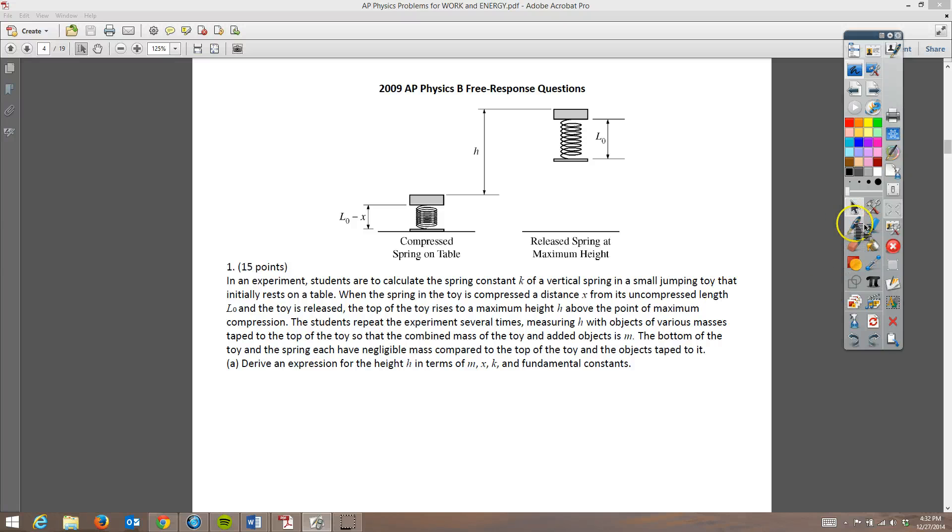Hey, this is Horner, and this is 2009 AP Physics B Free Response Question Number 1, worth 15 points. We've got a spring that's attached to a mass, and then just to a little block on the bottom that doesn't have any mass, neither does the spring. We compress it, and when we let go, boink, it pops up really high, so it's kind of a popping type toy.